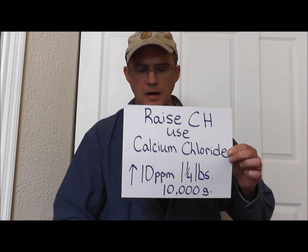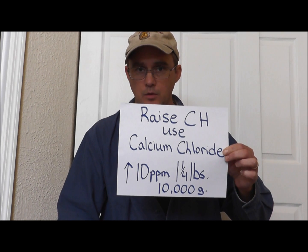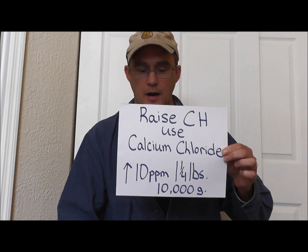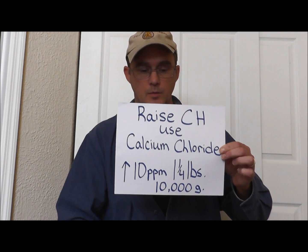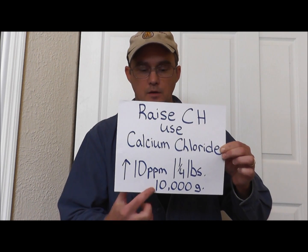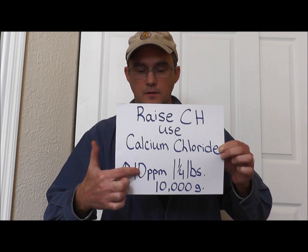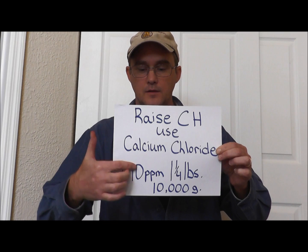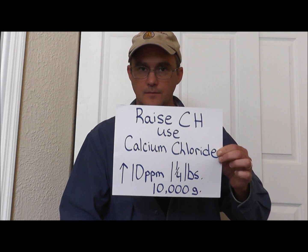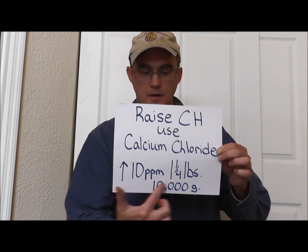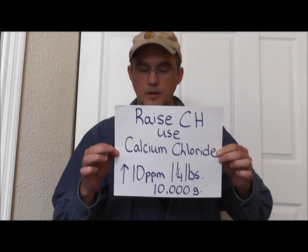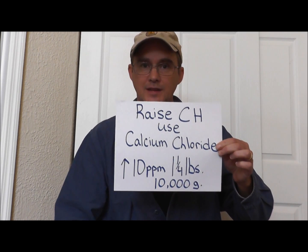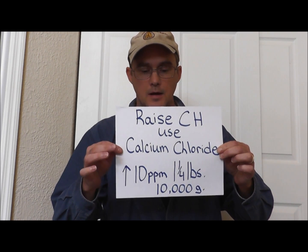If you have a 20,000 gallon pool and you want to raise it 10 parts per million, simply double the amount of calcium chloride. If you have a 30,000 gallon pool and you want to raise it 10 parts per million, you triple that. If you have a 10,000 gallon pool and you want to raise the calcium hardness 20 parts per million, double that. If you want to raise it 30 parts per million, double that amount again. That baseline of 1.25 lbs per 10,000 gallons per 10 ppm is what I've always gone by.